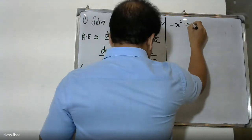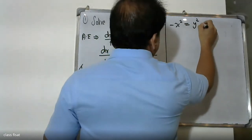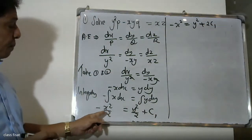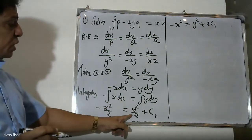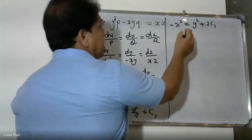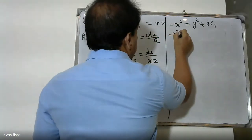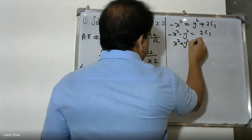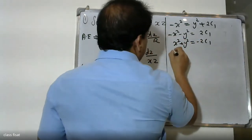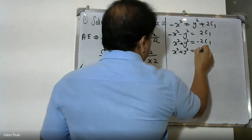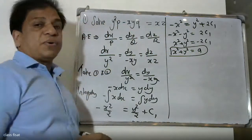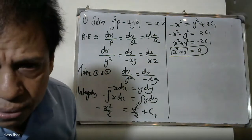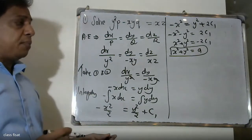After integration: minus x² by 2 equals y² by 2 plus constant. Rearranging: minus x² equals y² plus 2c1, therefore x² plus y² equals a constant. So x² plus y² equals a is our first result.